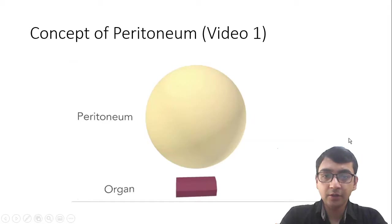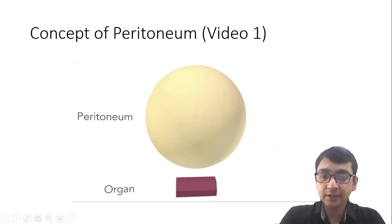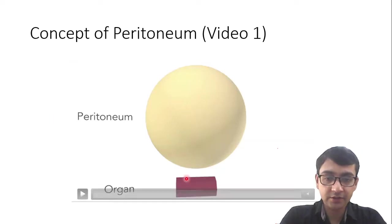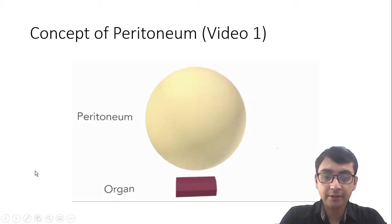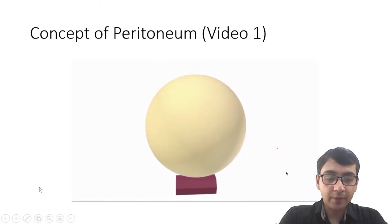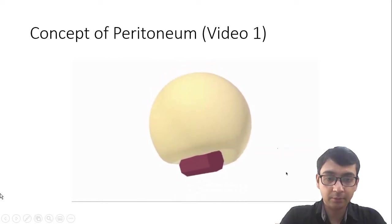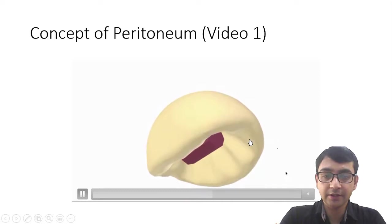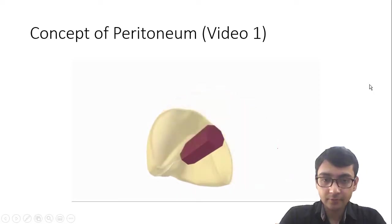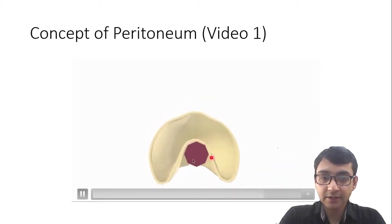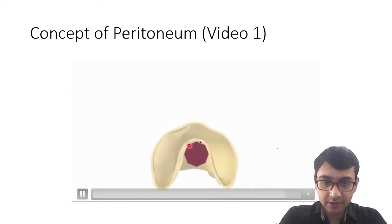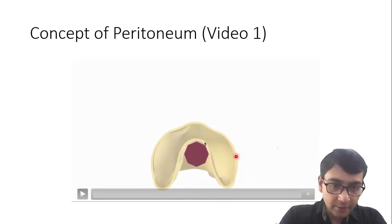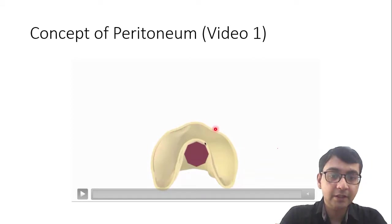We will give a brief discussion. First, you should know the concept of peritoneum. A famous example is punching the balloon. Assume this whole balloon is the peritoneum and you want an organ to enter into it. As a simple organ moves into the peritoneum, a part of the peritoneum gets attached to the surface of the organ. The part encircling the viscera is known as the visceral layer of peritoneum, and the part remaining in its original place is known as the parietal layer of peritoneum.